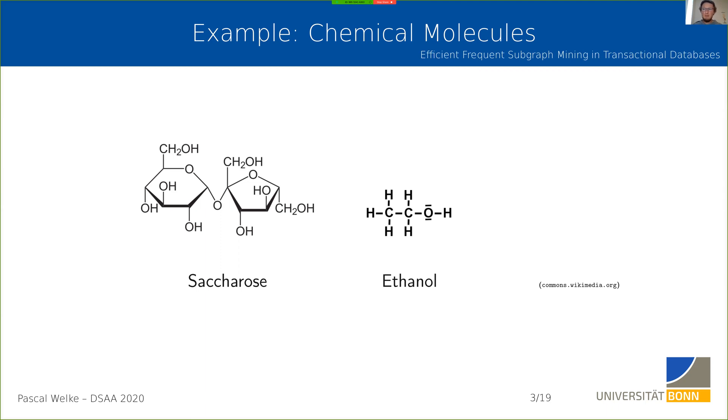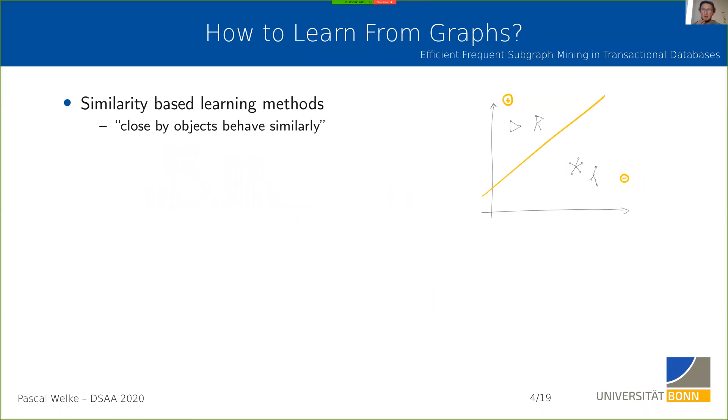Once we have these graphs, the next question is how we can learn from this data. Graphs and tabular data are not easy to move one into the other, so you need methods that work with graphs. One way would be using similarity-based methods where you argue that objects that are close by, graphs that are somehow similar, behave similarly with respect to the thing you want to predict.